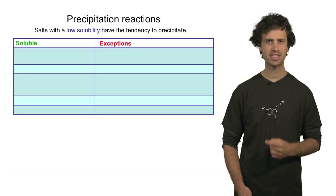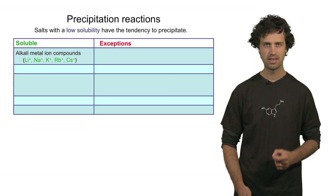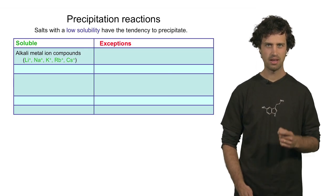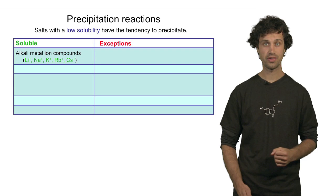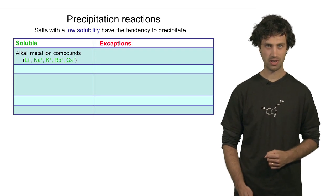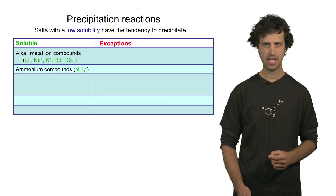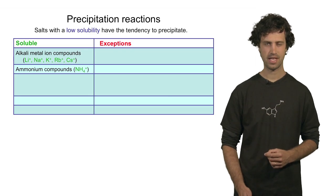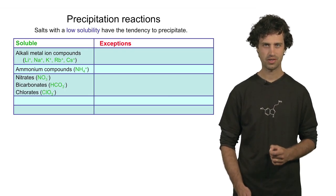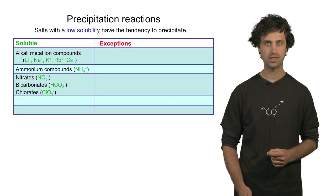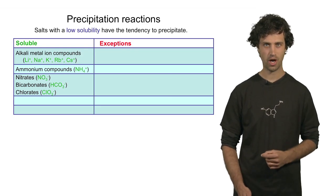The following table is very important. We see that compounds that contain alkali metal ions are compounds that are generally soluble in water. And so are compounds that contain the ammonium ion. In addition, nitrates, bicarbonates, and chlorates are ionic compounds that are soluble in water.